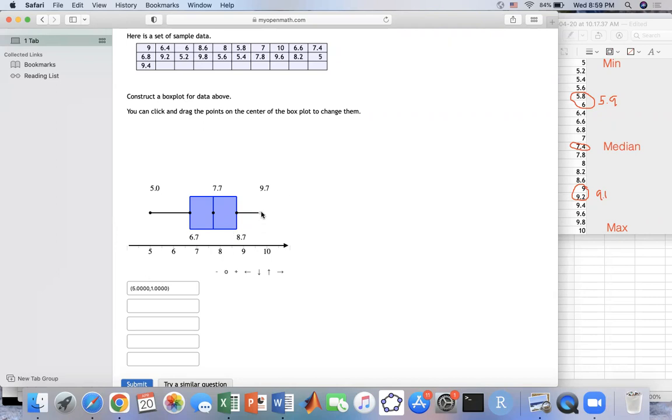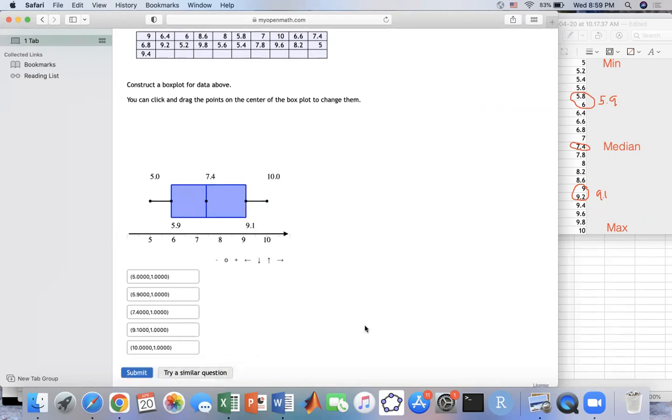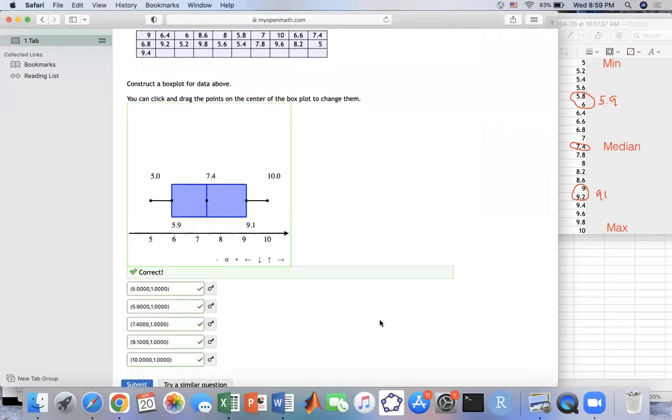And then my maximum would be 10. So I stretch it out to 10. And then my median right here, that would be 7.4. That means the middle number have to go down to 7.4. And then my Q1, that's here 5.9. So I can move down here 5.9. And then this last one would be 9.1 right there. So you see the numbers are shown up right here. It's supposed to be correct. And then I submit, I should have everything correct.